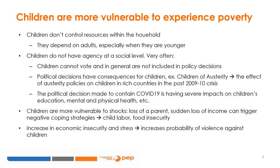Third, children are particularly vulnerable to poverty. They do not typically control resources within the household, but depend on adults for material resources, food, shelter, care, and so on. This is true especially for young children. In general, children have little agency and opportunity at the social level. They do not vote and are not normally included in policy decisions, even when they have hard consequences from them. For example, the austerity policies following the 2009-10 crisis in Europe had devastating consequences on children, and the policies taken in 2020 to manage the COVID-19 pandemic are having severe impacts on children's lives.